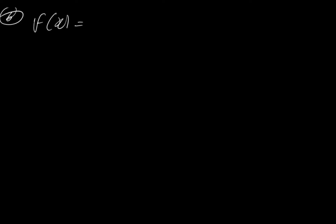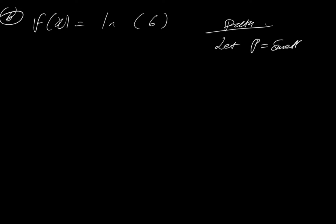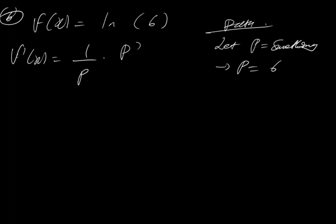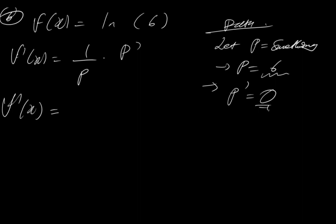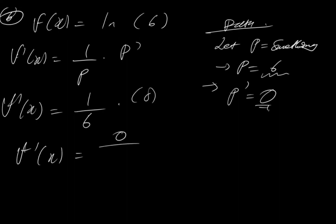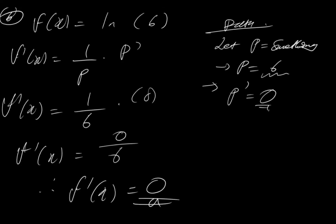Let's look at the last example — example 6. f(x) = ln(6). Remember, it all comes down to knowing what something is. So let p equal to something. Therefore p is 6. So f'(x) would be 1 over p times p'. Now what is p'? Remember, the derivative of a constant is 0. So you end up having f'(x) equal to 1 over 6 times 0, which is 0 over 6. Therefore f'(x) is just 0. This concludes that the derivative of a constant is basically 0.